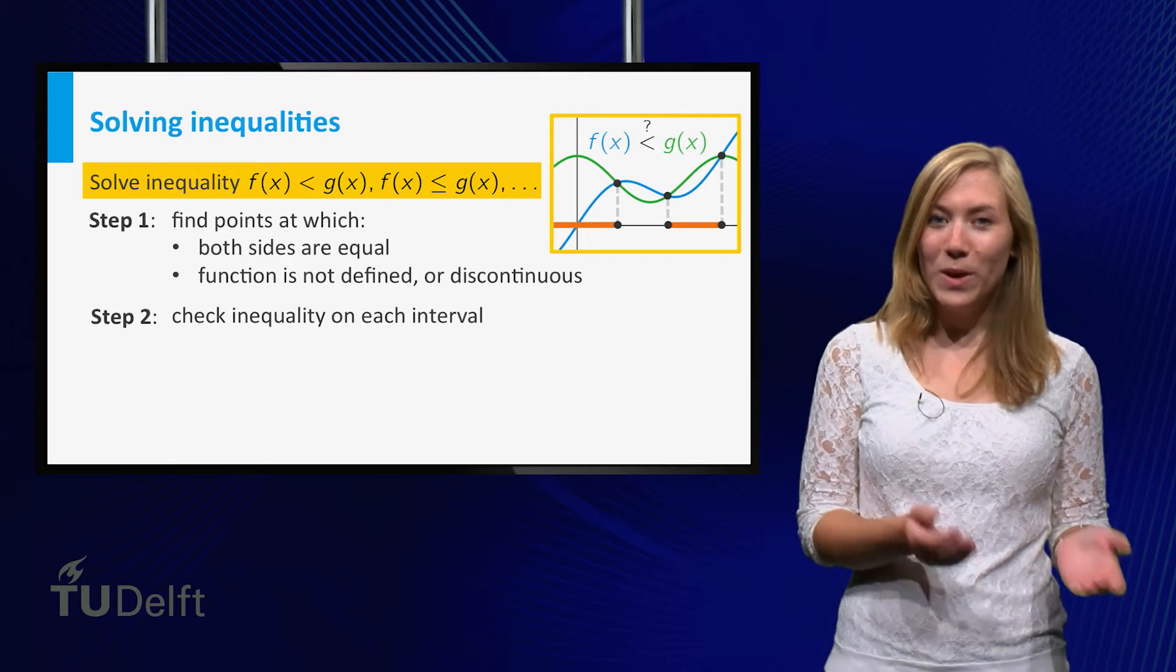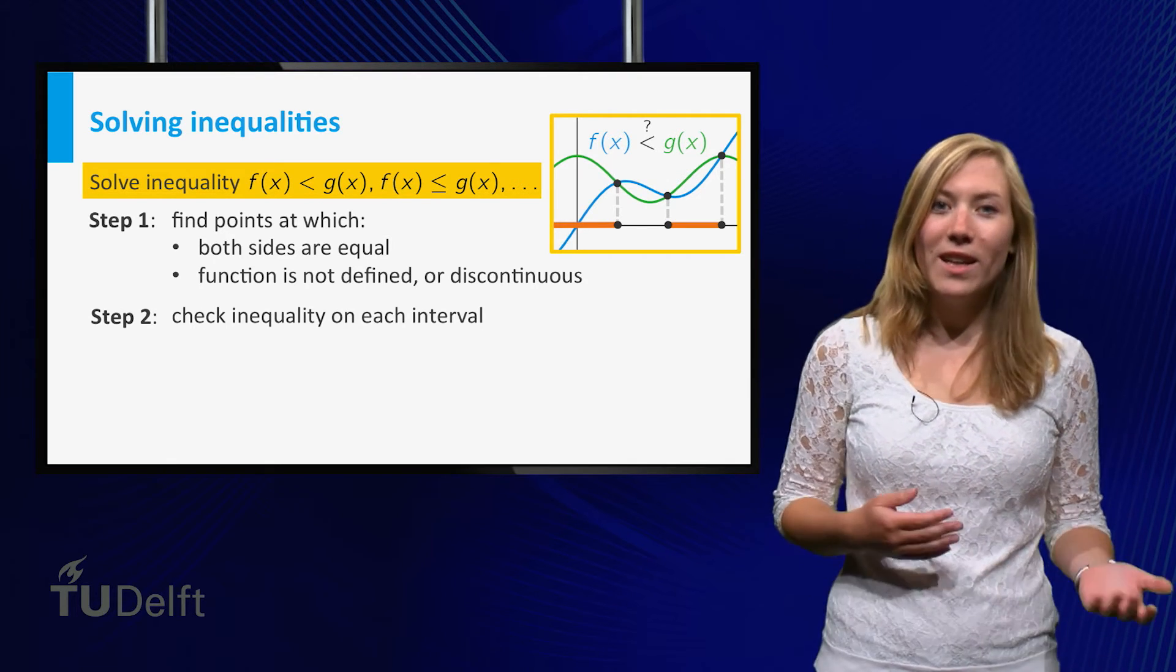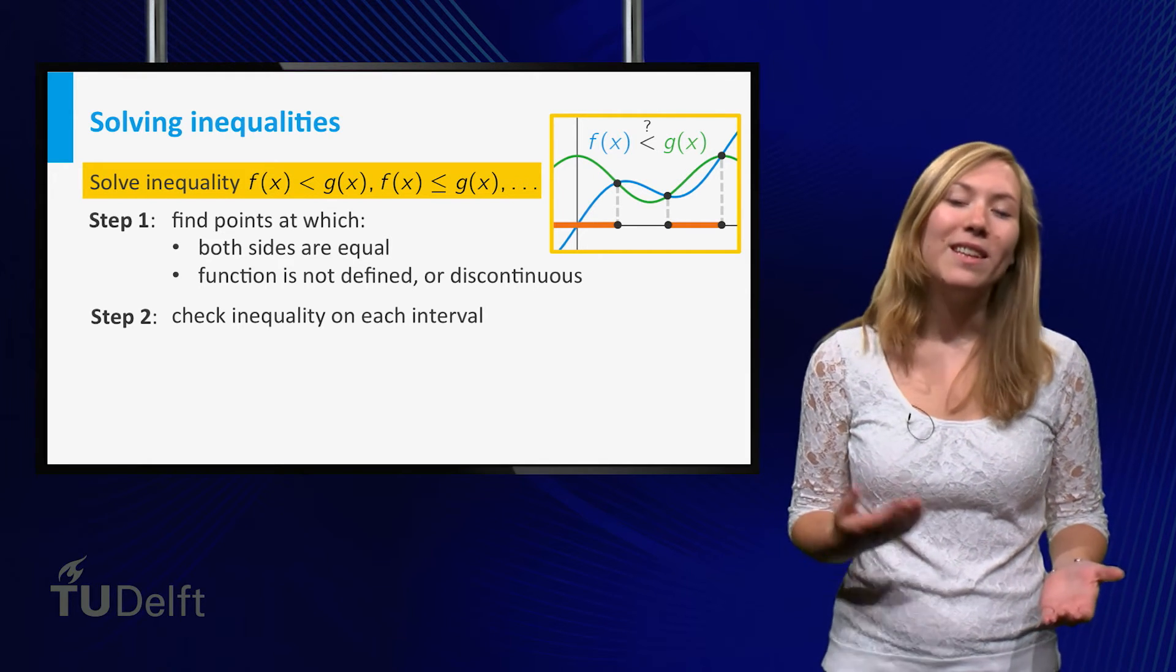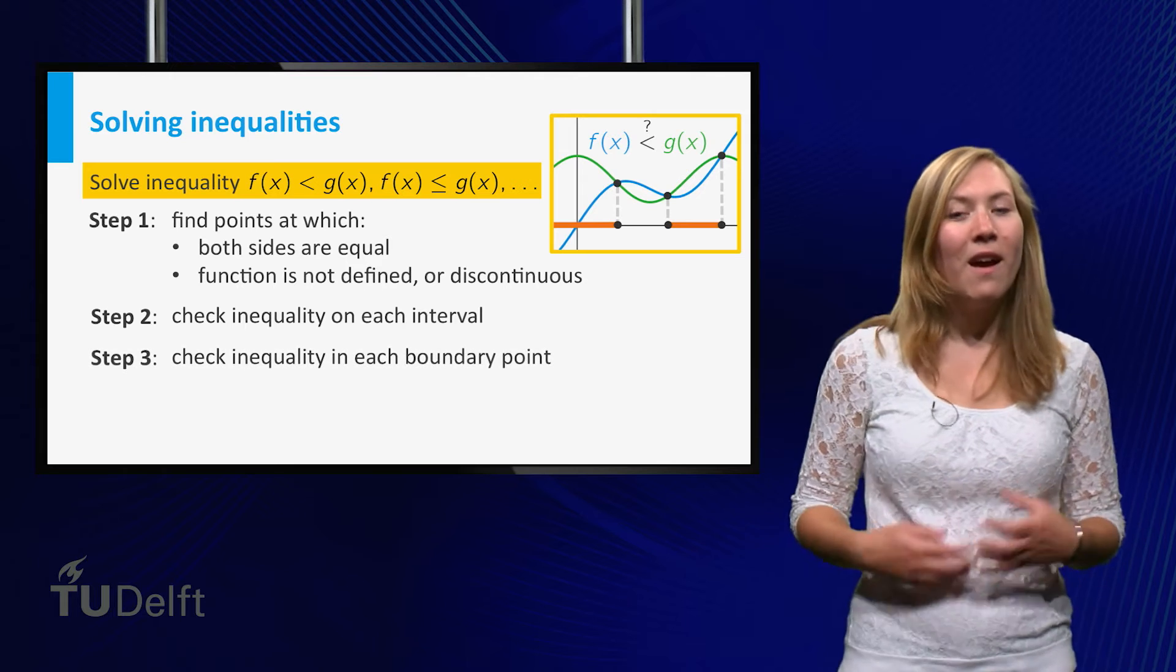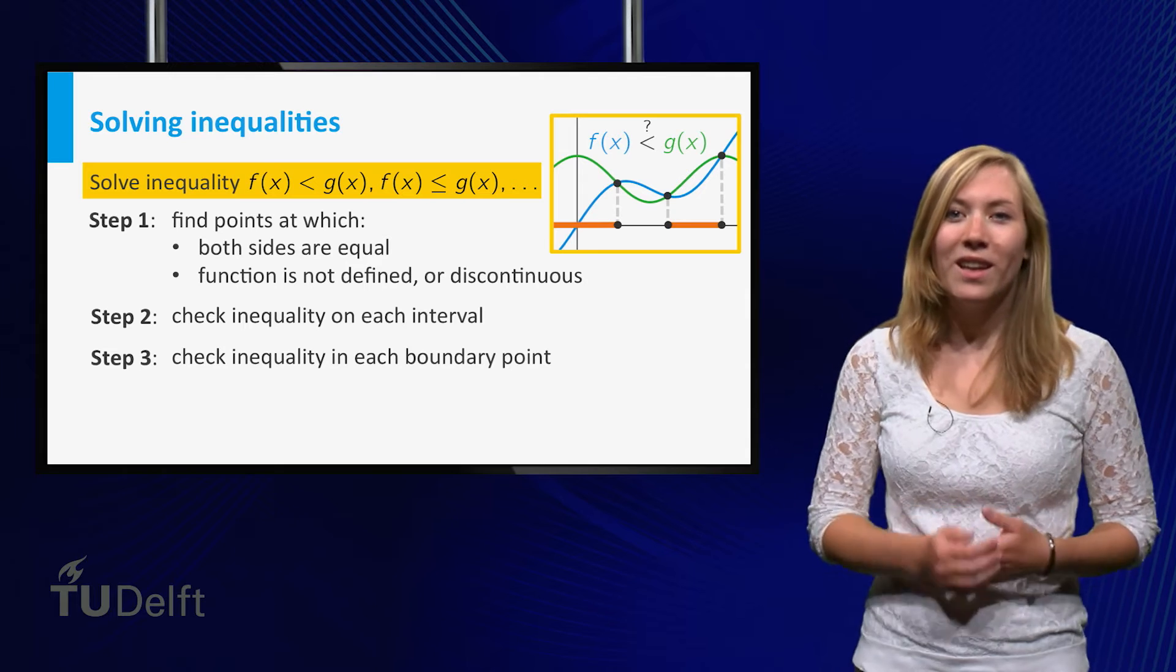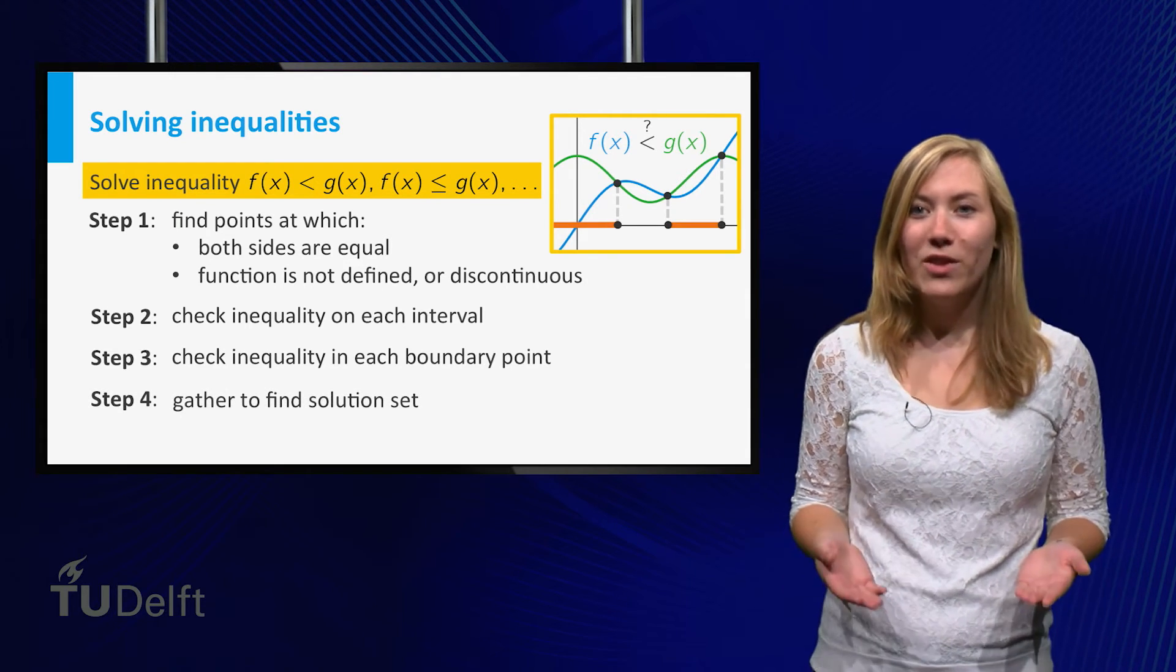Then these points divide the real line into intervals. Look at each interval whether the inequality holds. You can check this at one point in the interval. Finally, check at each boundary point whether the inequality holds. The solution is then the union of intervals on which the inequality holds.